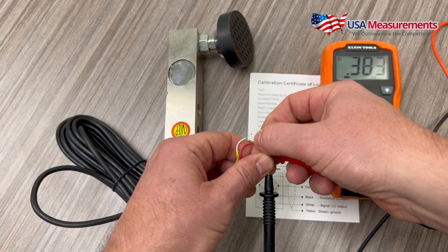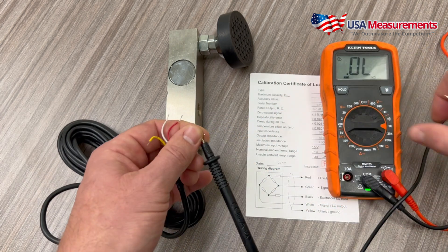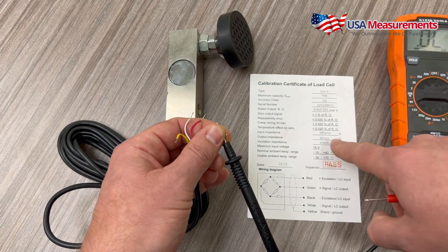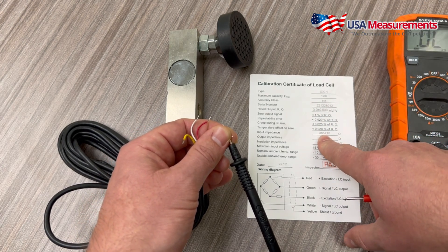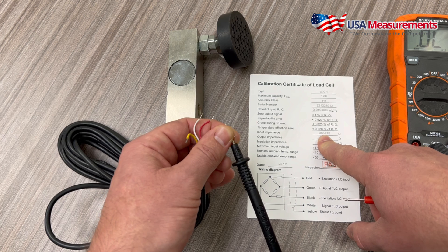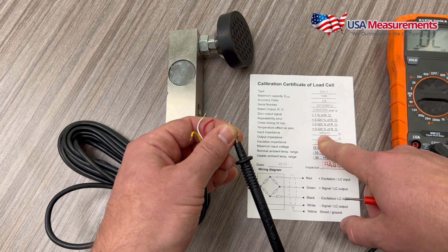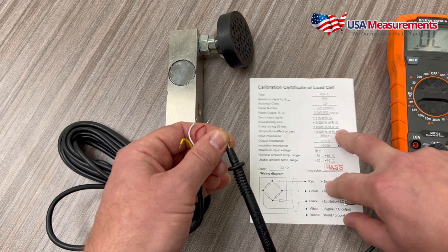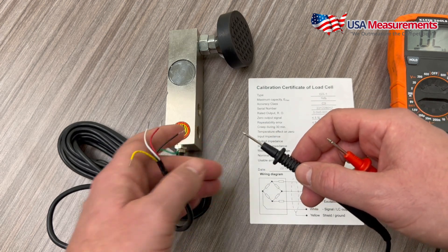And we are coming up with 383 ohms. And if we take a quick look here, input impedance would be 385 plus or minus 10 ohm readings. So next we'll do the output impedance, which is going to be our